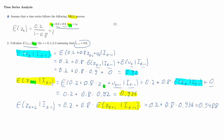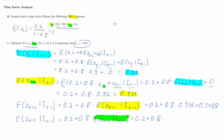Last step: we calculate the expected value of Zt plus 3 given the same information set — information available at time T minus 1 — so it's a four-step-ahead forecast. The same pattern applies: 0.2 plus 0.8 times the expected value of Zt plus 2 given I_{t-1}. That three-step-ahead conditional expectation was 0.9488, so using it here, the result is 0.95904.